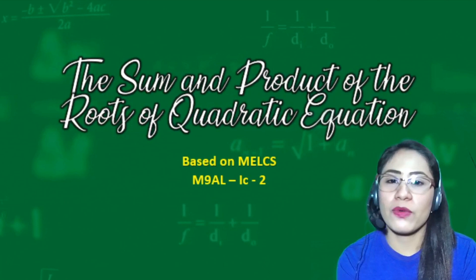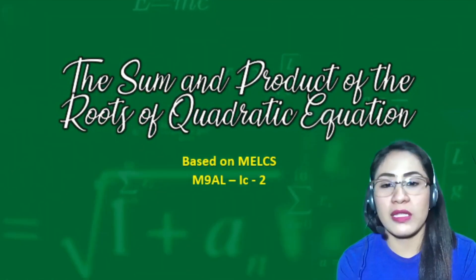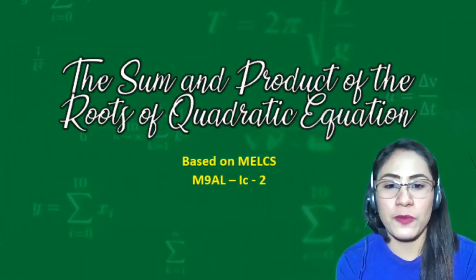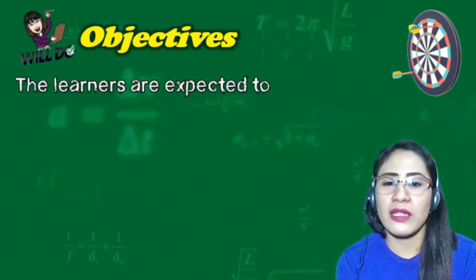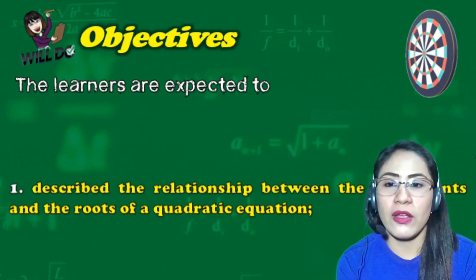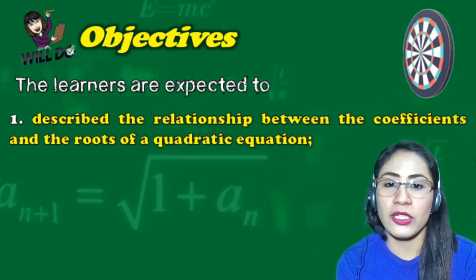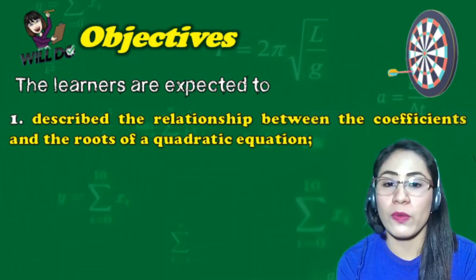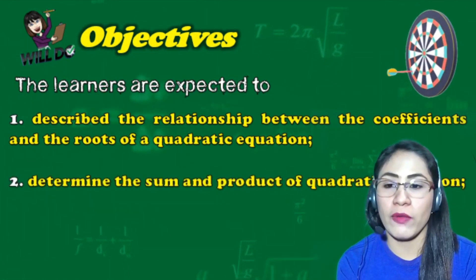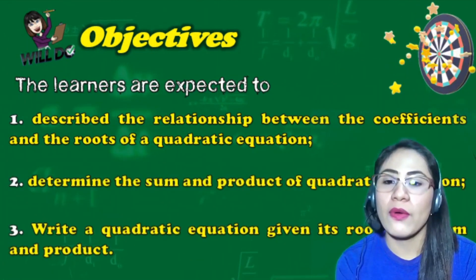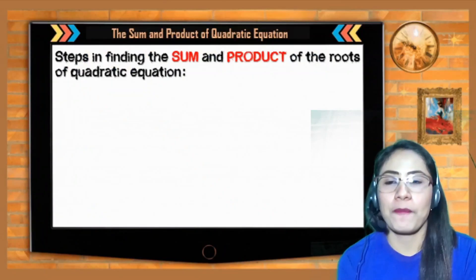The sum and product of the roots of a quadratic equation — this is based on the most essential learning competencies from DepEd. The objectives of this lesson: learners are expected to describe the relationship between the coefficients and the roots of a quadratic equation, determine the sum and product of the roots, and write a quadratic equation given its roots and sum and product.